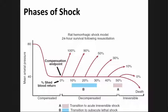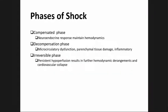We have the phases of shock. The pathophysiologic responses vary with time and in response to resuscitation. In hemorrhagic shock, the body can compensate for the initial loss of blood primarily through the neuroendocrine response to maintain hemodynamics. In the compensated phase, we see neuroendocrine response to maintain hemodynamics. In the decompensation phase, there is microcirculatory dysfunction, parenchymal tissue damage, and inflammation. In the irreversible phase, persistent hypoperfusion results in further hemodynamic derangement and cardiovascular collapse.